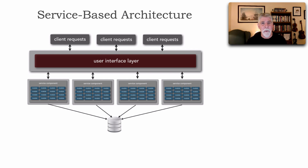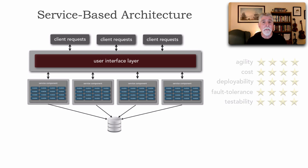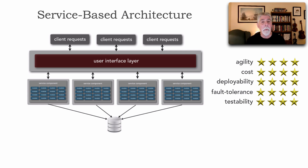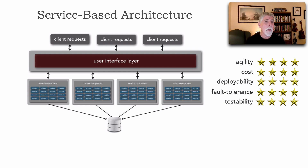From its superpowers — what is it good at doing? These are the star ratings that Neil and I put together in our Fundamentals of Software Architecture book for service-based architecture. Five stars is the best, one star is the worst. We see agility — that ability to respond quickly to change — combined with great deployability, flexibility, fault tolerance, and testability. Notice cost is also four stars, meaning it's good. This is not an expensive architecture style.